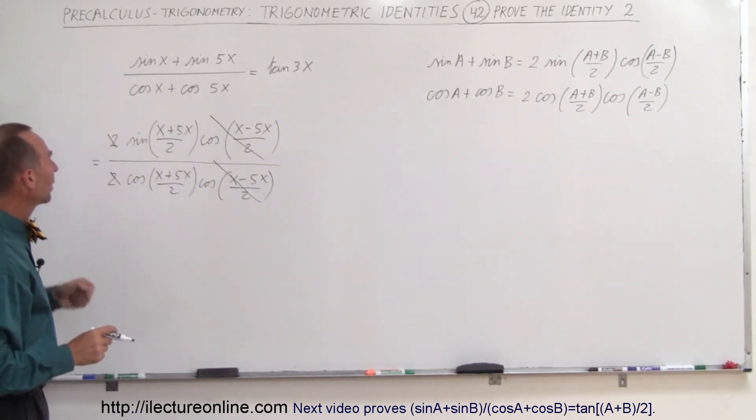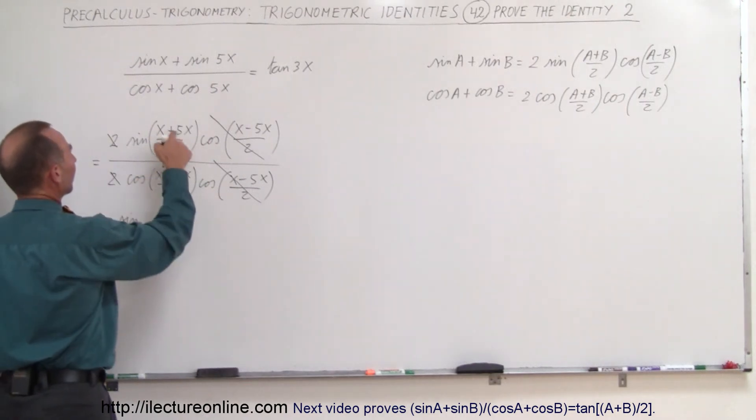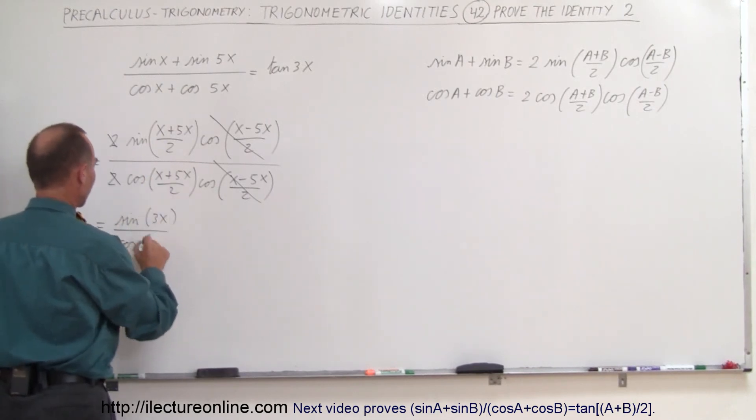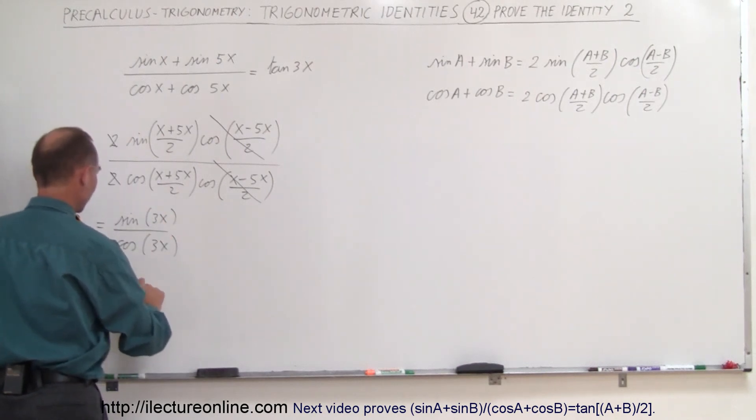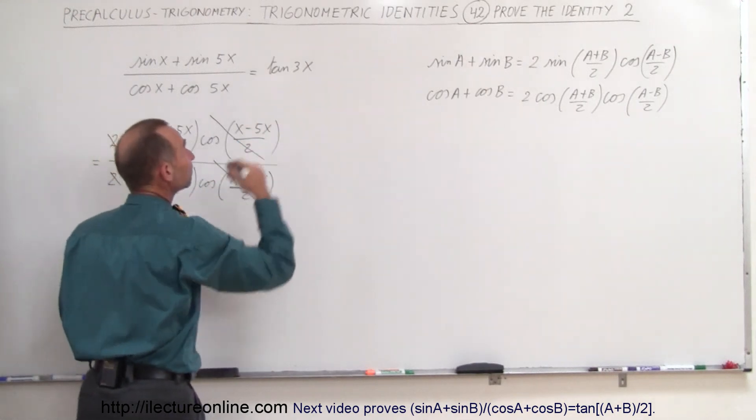So we're left with the sine divided by the cosine. So this is equal to the sine of 6x divided by 2 which is 3x divided by the cosine of 6x divided by 2 which is 3x. And that of course then simplifies to the tangent of 3x.